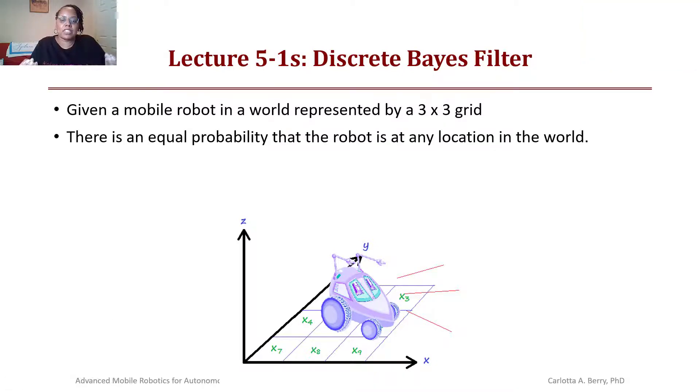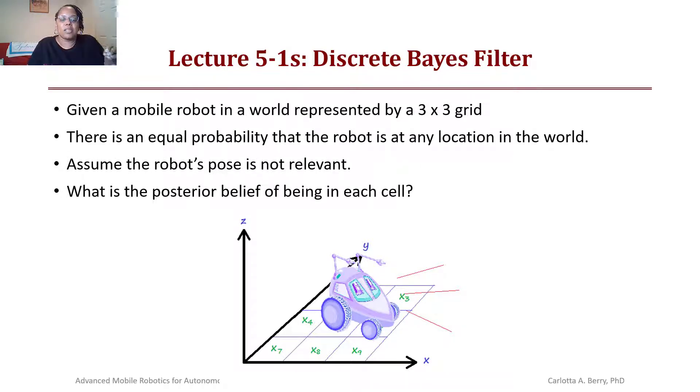So that would be a probability of one over nine for each of the grids. We assume that the robot's pose is not relevant, so we're only going to focus on location. What is the posterior belief of being in each cell in the world?